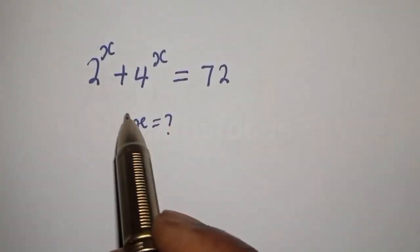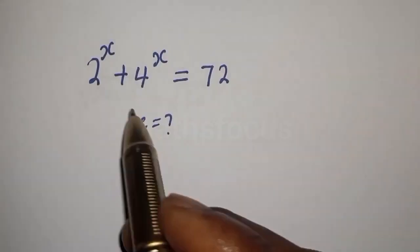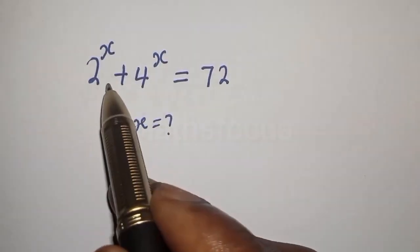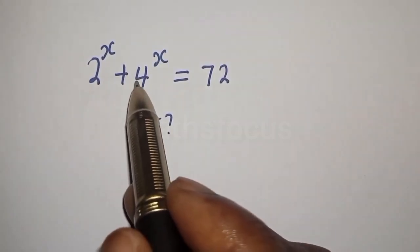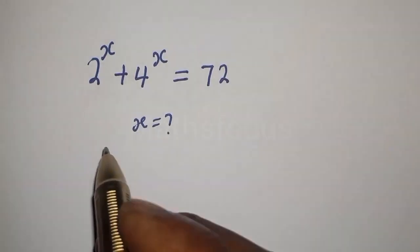Hello, in this class I want to find the value of s from this equation: 2 raised to power s plus 4 raised to power s is equal to 72.